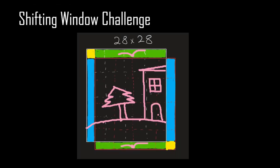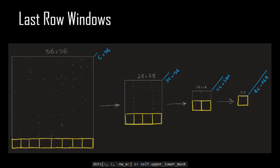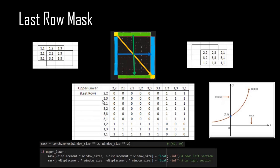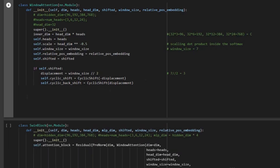Let's review: the cyclic shift causes a challenge especially for the last row and last column. For each stage we are going to apply this masking for the last rows and last columns. We showed how our mask matrix should look for the last row and how it should look for the last column. Now let's go forward and look at our class again, where we need to consider those masking operations.